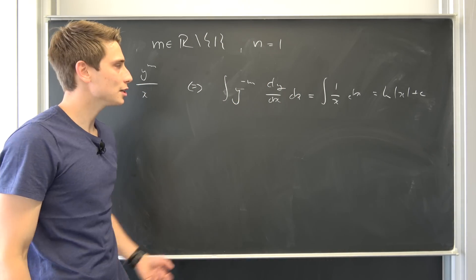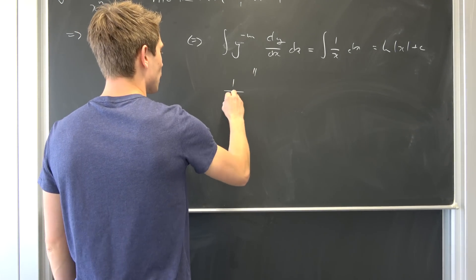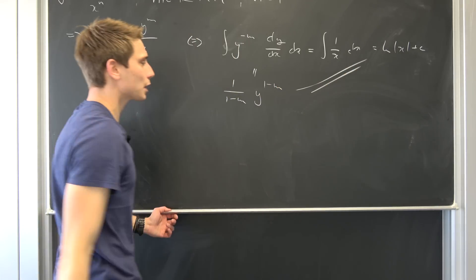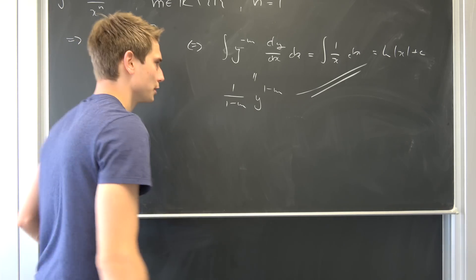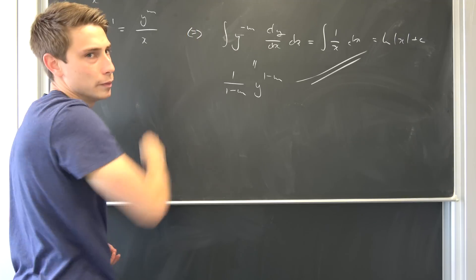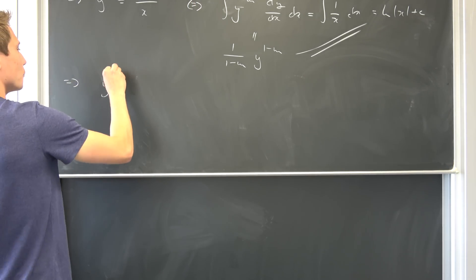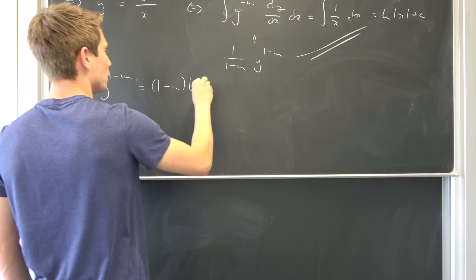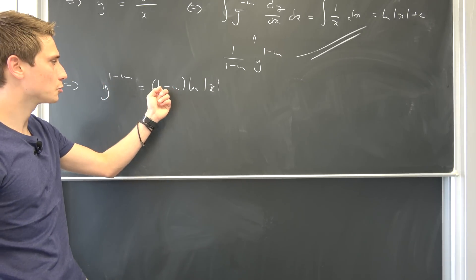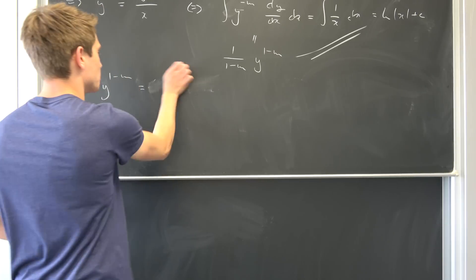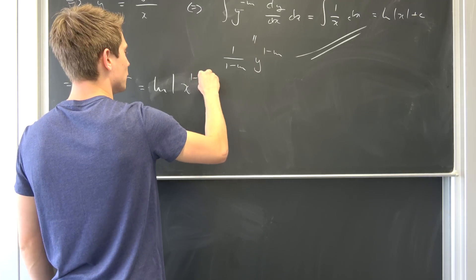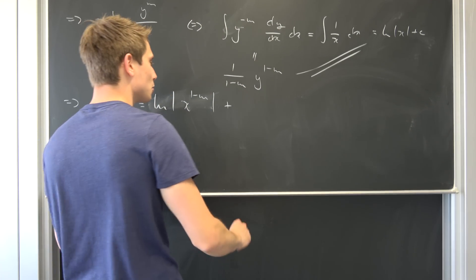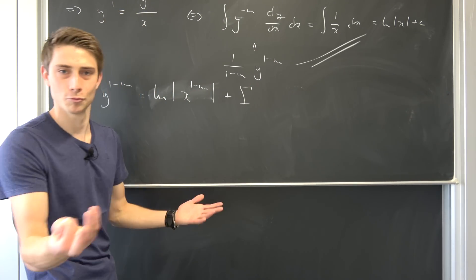The left side evaluates to 1 over (1 minus m) times y to the (1 minus m)th power. Those are equal. Multiplying both sides by (1 minus m) — not equal to zero, without 1 — we get y to the (1 minus m)th power equal to (1 minus m) times the natural log of x. Using the log property, we can bring (1 minus m) as the exponent of x inside the log, giving natural log of x to the (1 minus m)th power, plus a constant — let's call it gamma.